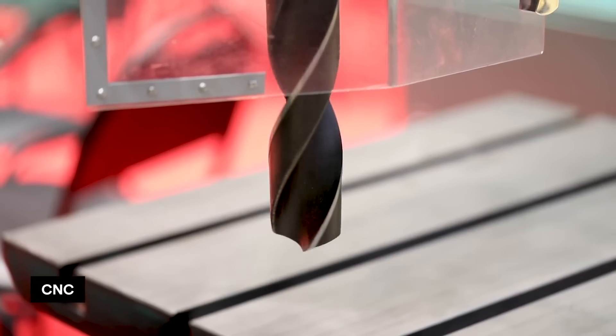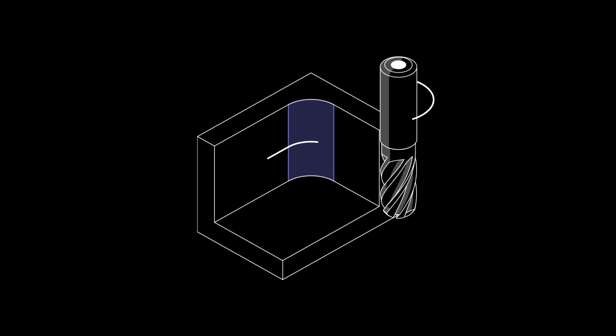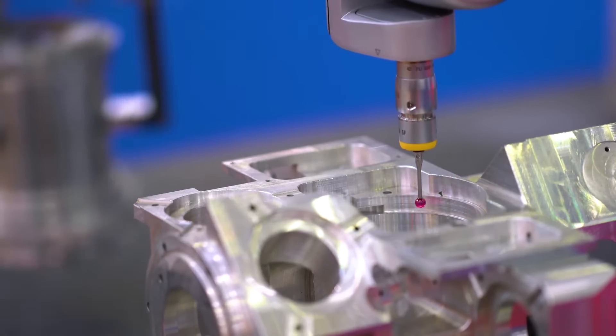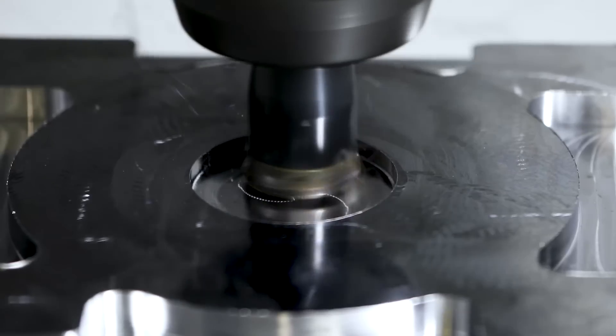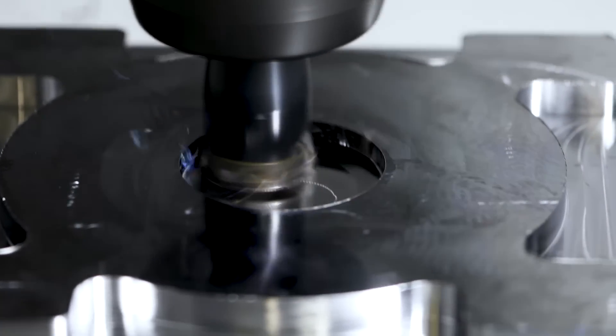Let's start with tool geometry. Most CNC machining cutting tools have a cylindrical shape with a flat or spherical end, restricting the part geometries that can be produced. For example, if you want the internal corners of your CNC part to have sharp corners, you simply can't manufacture that — internal vertical corners will always have a radius, no matter how small the cutting tool.